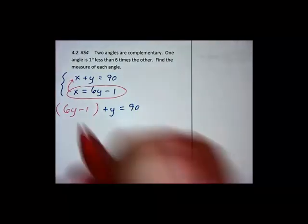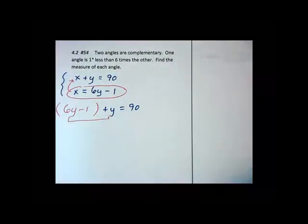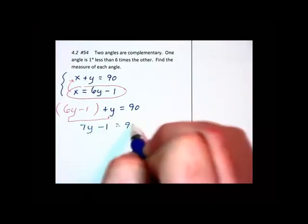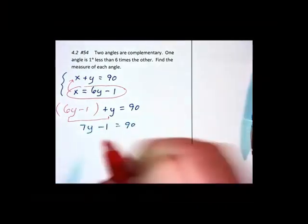Upon combining like terms, 6y and 1y make 7y minus 1 is 90. Add 1 to both sides.